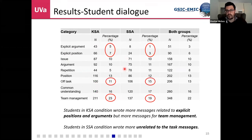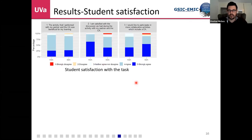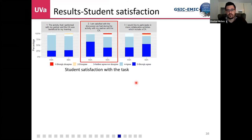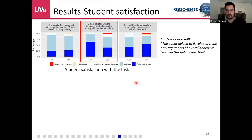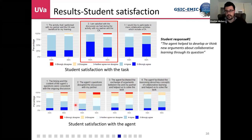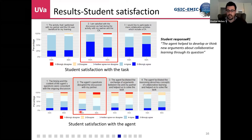In the social support agent condition, we saw more off-task behavior messages. With respect to student satisfaction, we found highly satisfied students with the task. In the knowledge support agent condition, students were more satisfied with the discussion — for example, the agent helped them construct their argument. Students also seemed more satisfied with the knowledge support agent itself, though some reported problems with the agent identifying the context of the discussion, saying for example that the agent should appear right on issues we are actually dealing with.